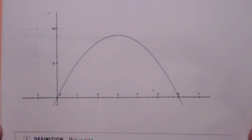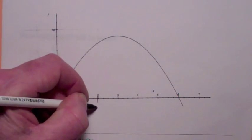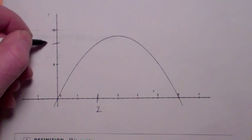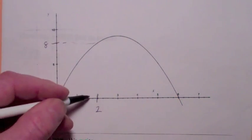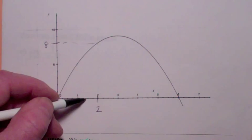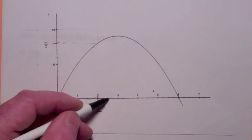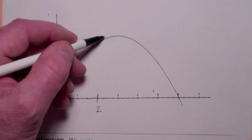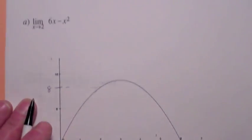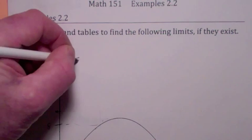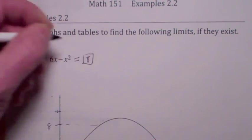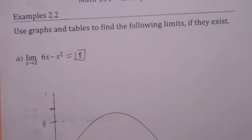If you look at the graph, it's pretty clear I think on this one that as x gets close to 2, you can see it better if I write it like this, from the left, from values less than 2, the y values are getting close to 8. And as x gets close to 2 from the right, from values greater than 2, the y values are also getting close to 8. This is why we say the limit as x goes to 2 of 6x minus x squared equals 8.